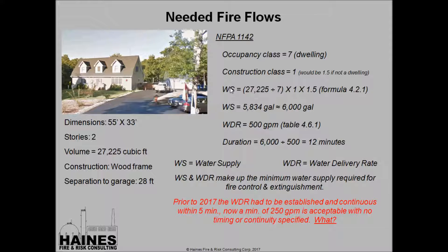The water supply — your gallons of water required to be on your assignment — is calculated by taking the volume of the building, dividing it by the occupancy class, multiplying it by the construction class, and in this case multiplying by 1.5 to add additional water for the exposure. We end up with approximately 6,000 gallons required on the assignment. Going to Table 4.61, we determine 500 GPM, giving a duration of 6,000 gallons divided by 500 GPM, or 12 minutes of flow.